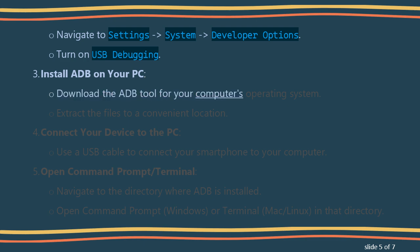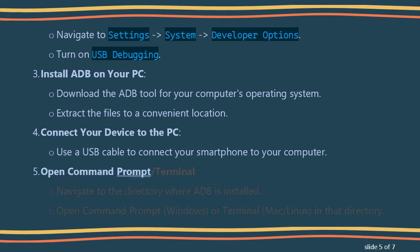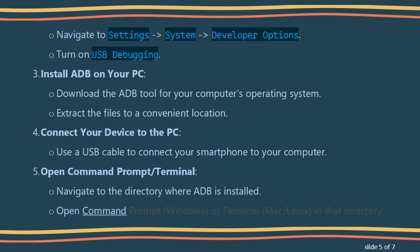Extract the ADB files to a convenient location. Connect your device to the PC using a USB cable. Open Command Prompt or Terminal and navigate to the directory where ADB is installed — use Command Prompt on Windows, or Terminal on Mac/Linux.